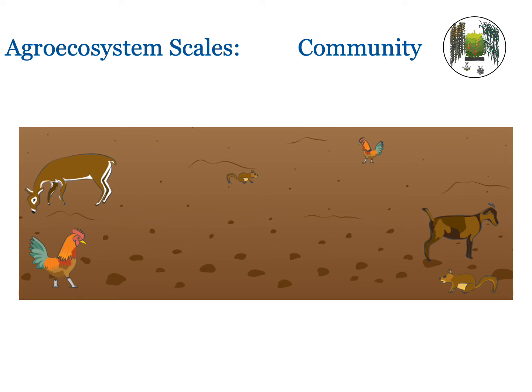The vertebrate community also adds to biological and ecological diversity. Beneficial vertebrates can leave manure for plant nutrition, eat weeds, and eat plant pests. Harmful vertebrates eat the crop or promote weeds.